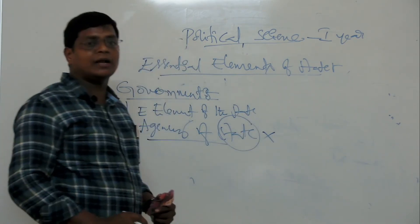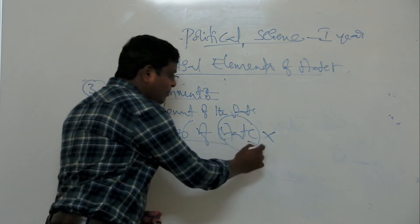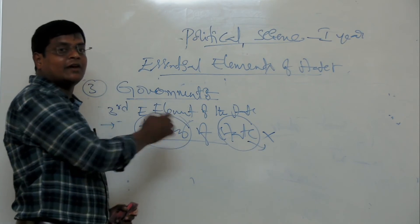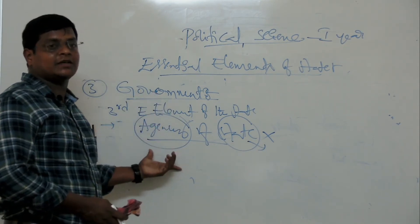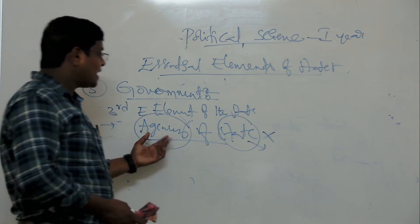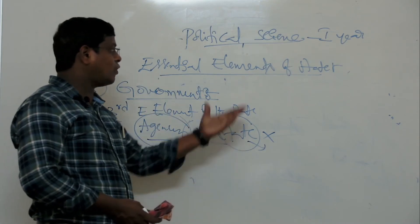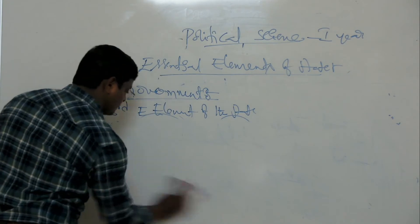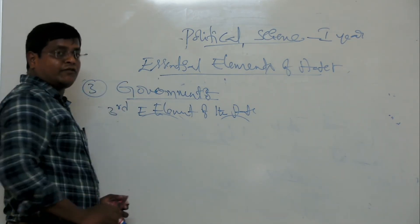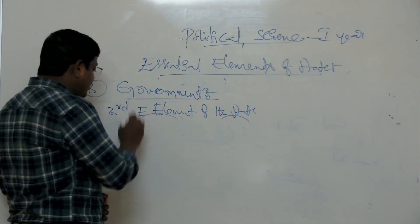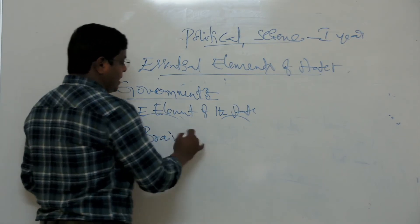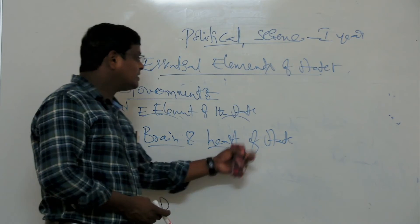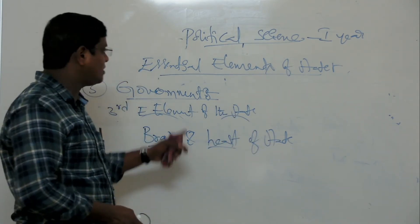Some political philosophers explain government as the brain and heart of the state — without it, the state cannot function. That is why government is very essential to the state. The government functions through its organs. The government has three organs: one is Legislature, the second is Executive, and the third is Judiciary. Through these three organs, the government expresses the state's objectives.